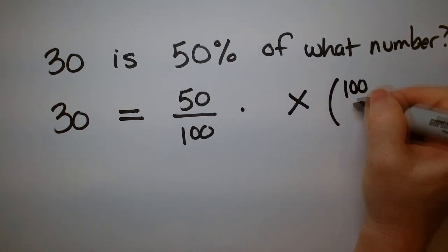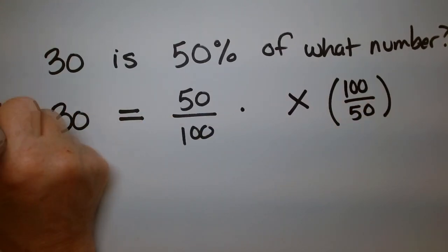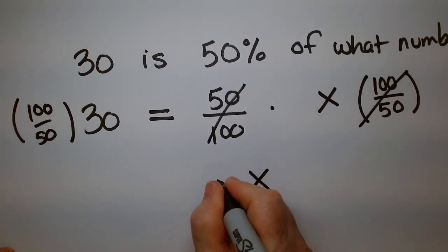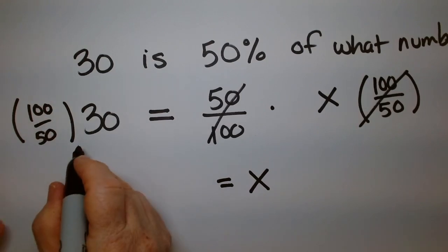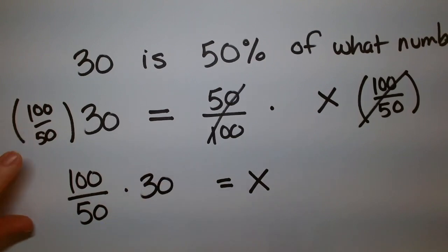100 over 50. And then this cancels with that. I just have X on one side. And I have 100 over 50 times 30.